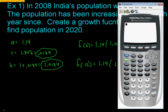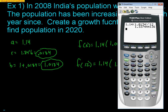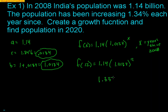Using the calculator: 1.14 times (1.0134) raised to the 12th power gives approximately 1.337 billion people in 2020. So 1.337 billion will be the estimated population of India in 2020.